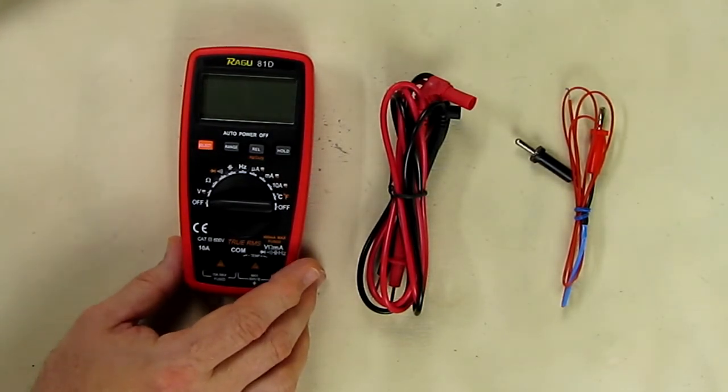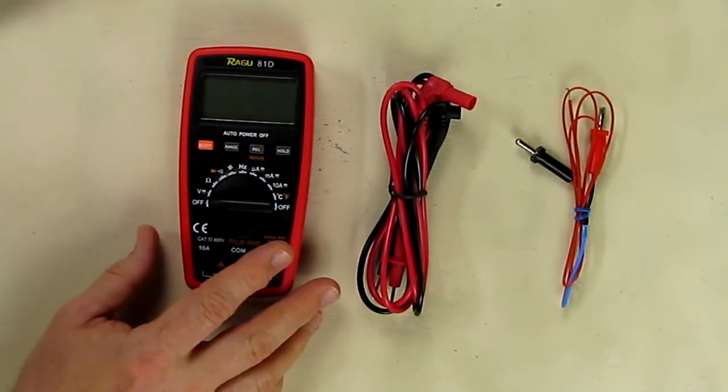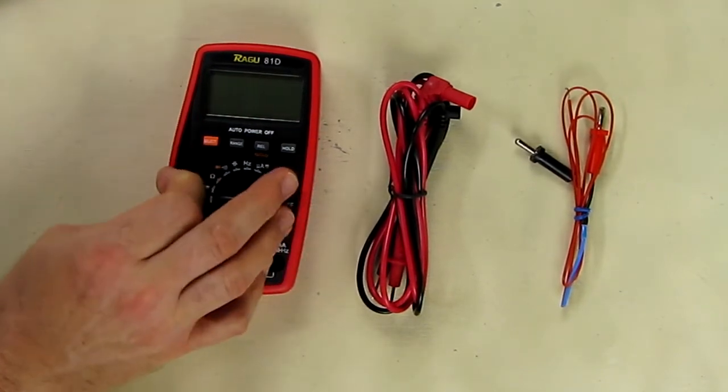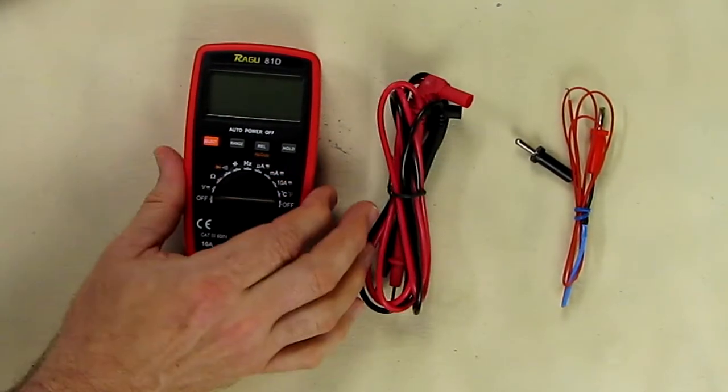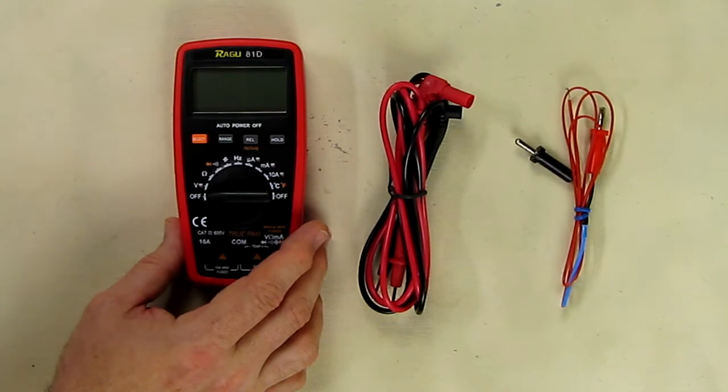It has diode tests, a low battery indicator, an oversized display, built-in thermostat I mentioned, data hold, shock resistance with a little rubberized case on there. It has auto power off and it comes with a one-year free replacement refund from the manufacturer which is nice.